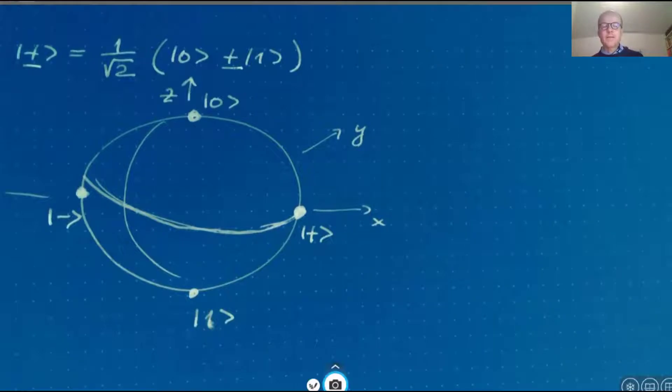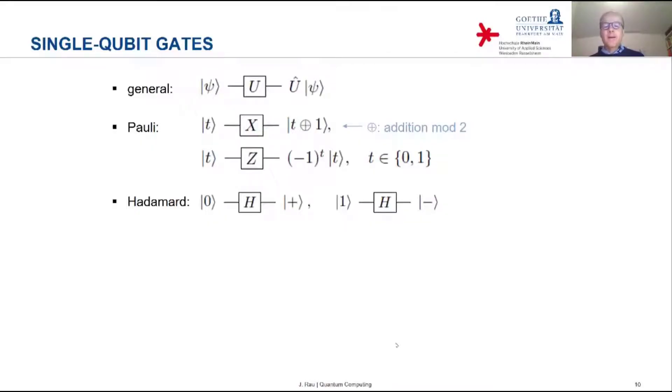And what the Hadamard gate does is it maps the basis state zero to the plus state and the basis state one to the minus state. So essentially it rotates the basis in the single qubit Hilbert space. It maps from the standard basis zero one to the plus minus basis.